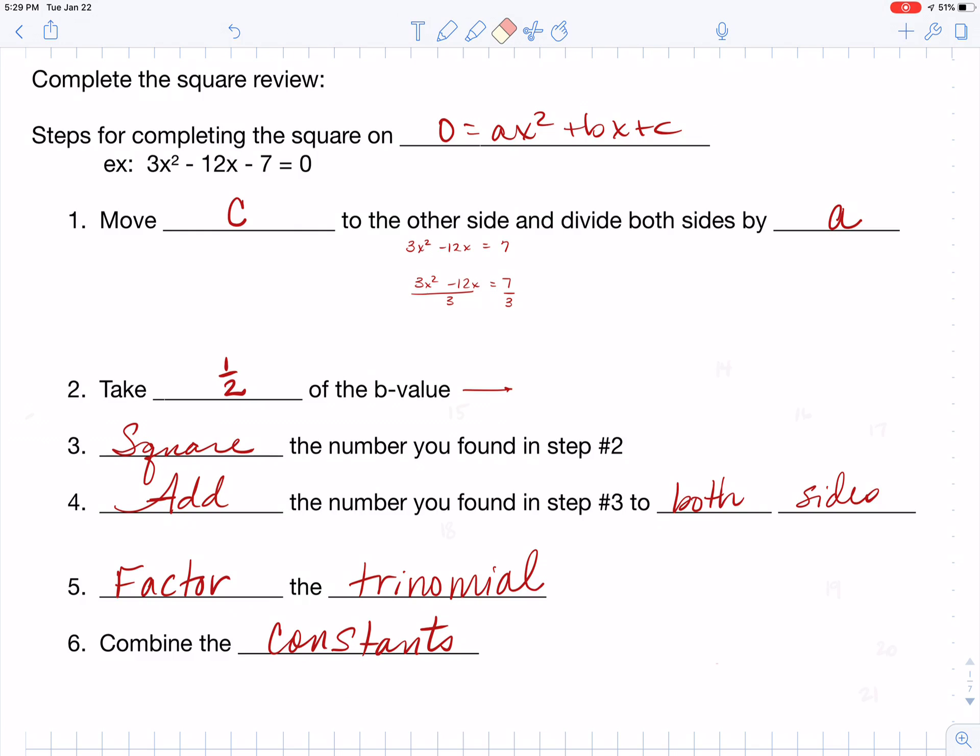After we've done that, let's go ahead and simplify. So you want to make sure here that you divide the first term by your 3 and the second term by your 3. So that's going to give you x squared minus 4x is equal to that 7 thirds.